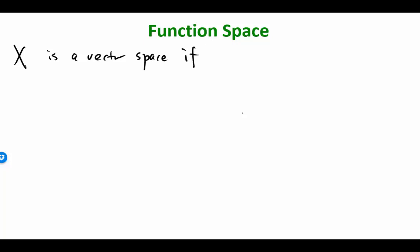So X is a vector space. If the following holds. Okay. So basically, when we define a vector space, we also need to define an addition and multiplication, right? Actually, let me do this multiplication.